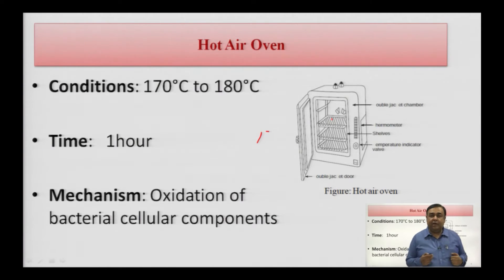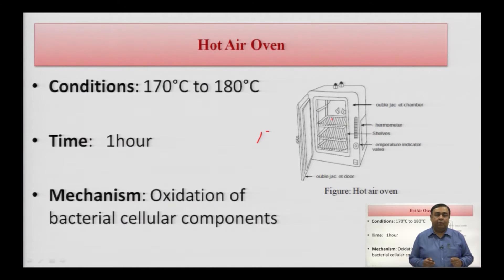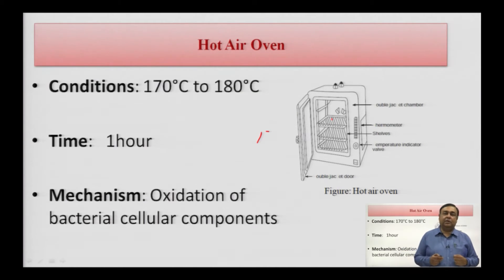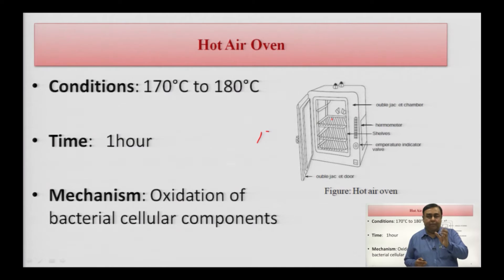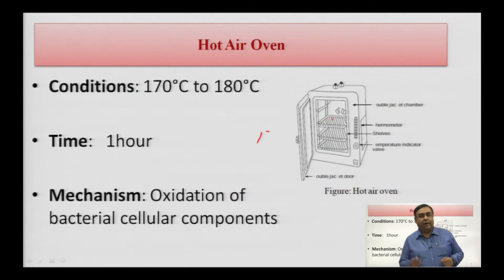How are bacteria killed in dry heat? As we studied, in moist heat the heat causes coagulation of protein. But in dry heat there is a process called oxidation of the cellular component. Bacteria have a high layer of peptidoglycan — a polymer of N-acetyl glucosamine and N-acetyl muramic acid — which mainly comprises the cell wall. Due to the high temperature of 170 to 180 degrees Celsius, the cellular components get oxidized and the microorganisms are killed.